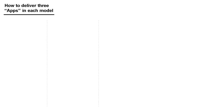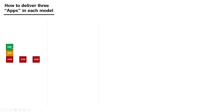Now I'm going to show you how to deliver three applications in each of the models we're going to cover. The first model is physical hardware — actually deploying things on servers. If you were tasked with deploying three applications on servers, you'd need to buy three servers. For application one, I'd take server one, install an operating system, install any required dependencies, then install the app. I'd repeat that process on server two for application two, and again on server three for application three.